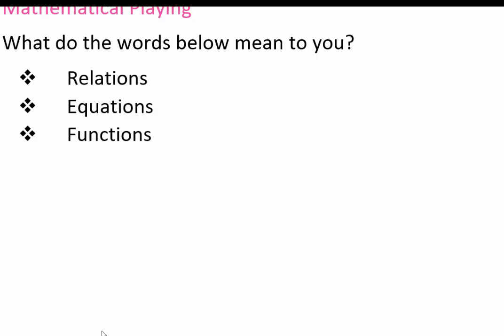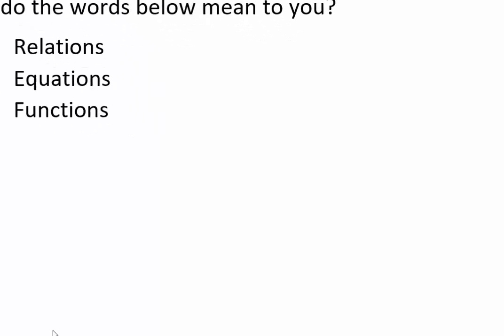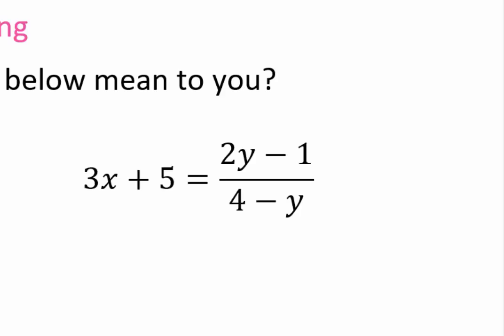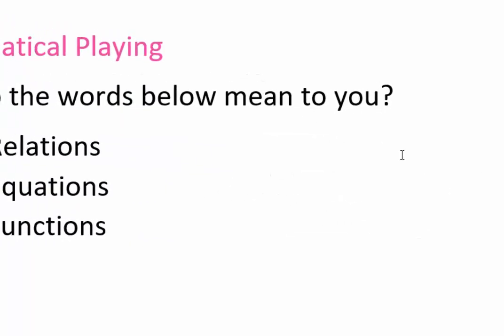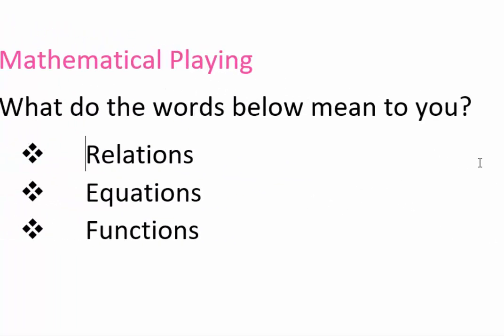Equations. What came to your mind? Automatically, you are thinking the equal sign. You might think of equations in one or two variables like what you see here: 3x plus 5 equals 2y minus 1 over 4 minus y. So equations could just be algebraic expressions that are equated to each other.